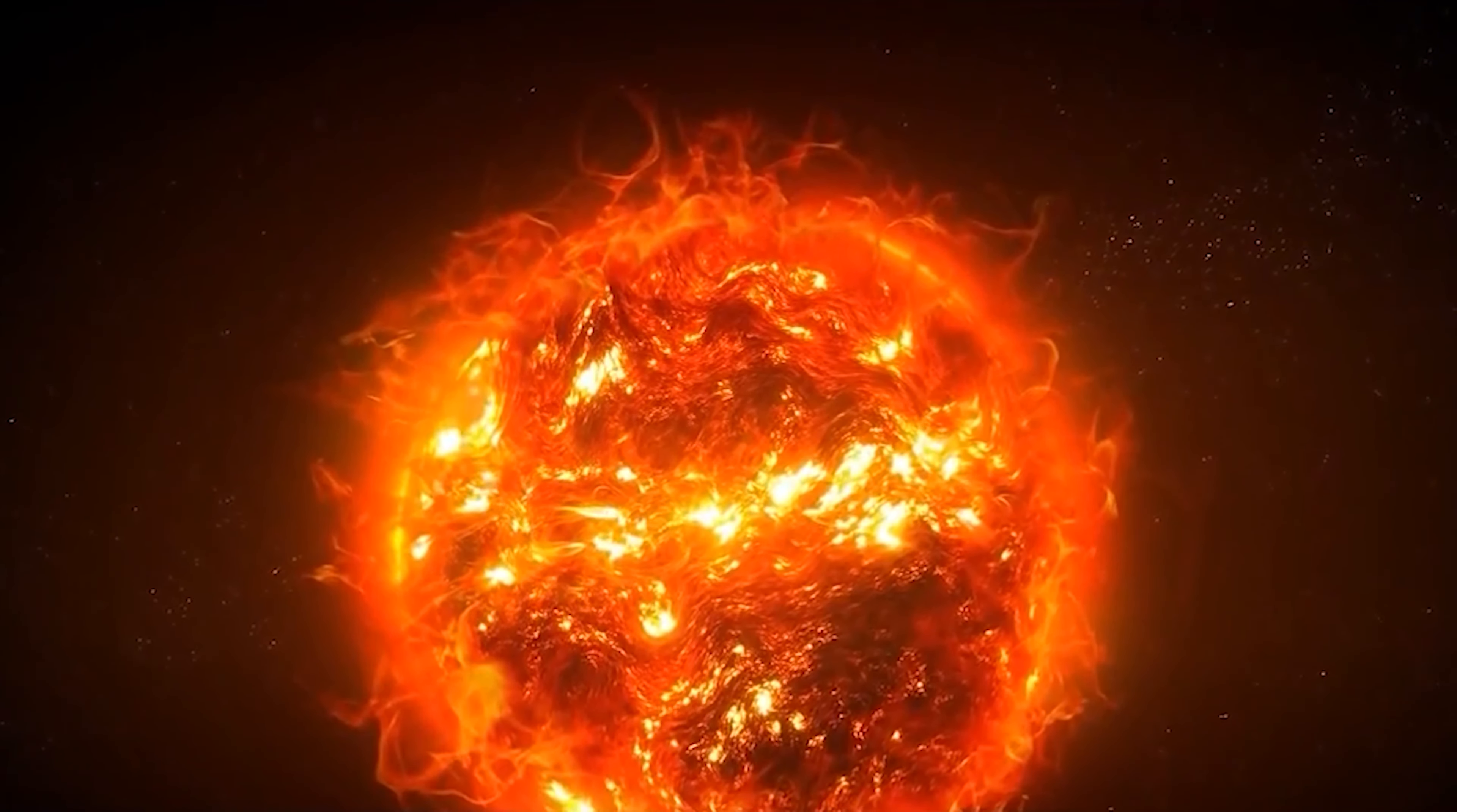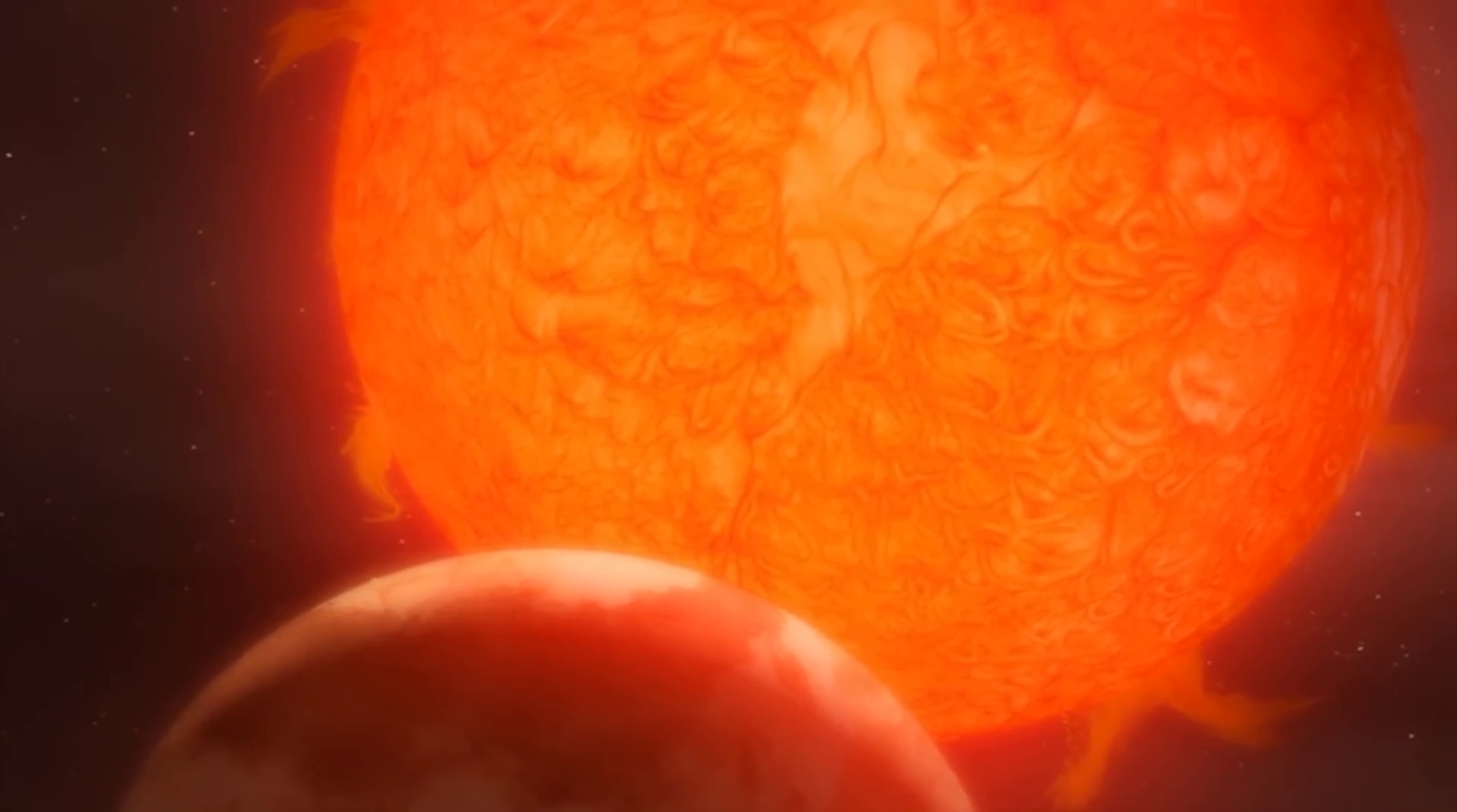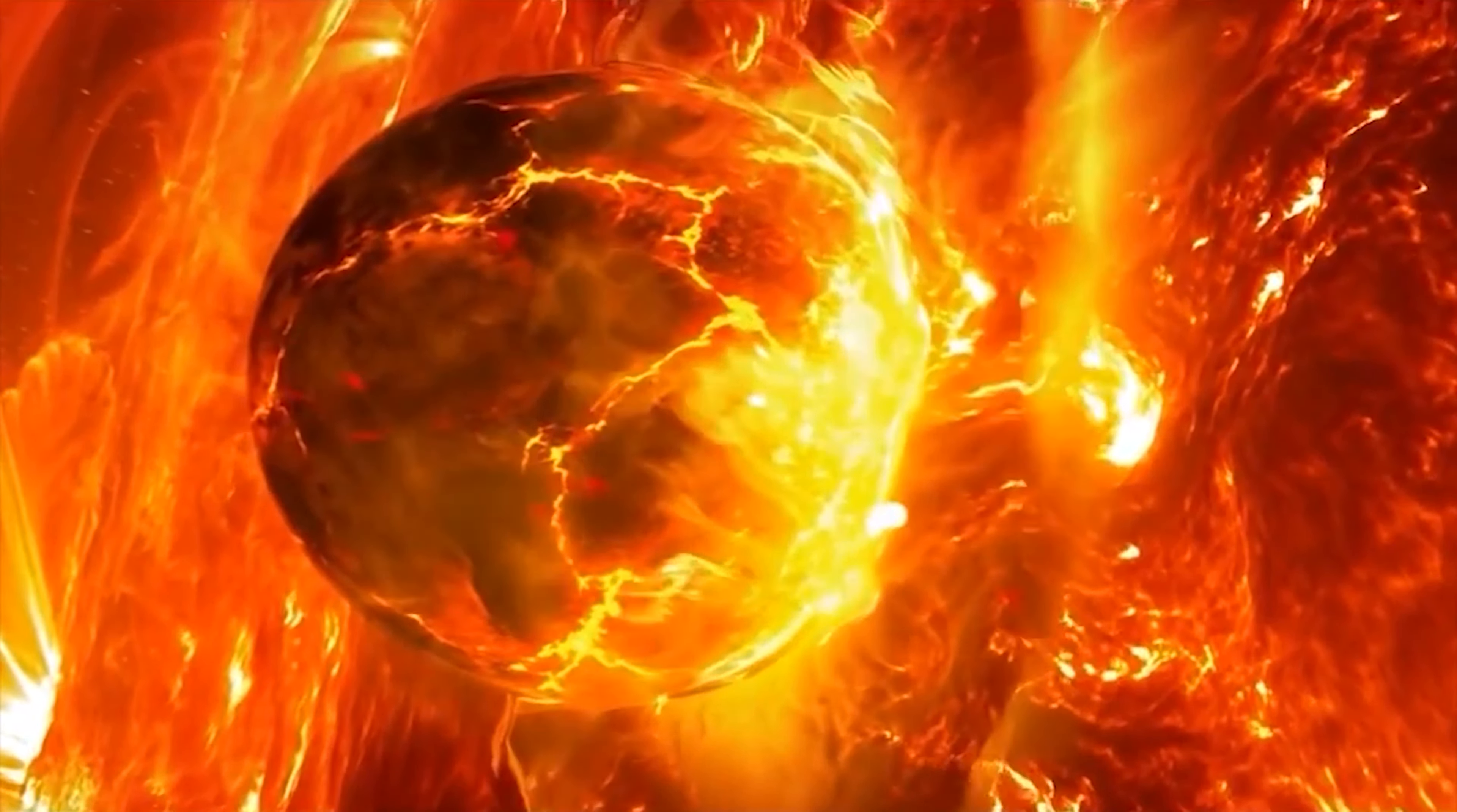The Sun would eventually swell up and transform into a giant red star. This is the final stage for the Sun. According to various estimates, this process would begin in about 6 to 8 billion years. As the Sun expands, first Mercury and then Venus would be swallowed up.